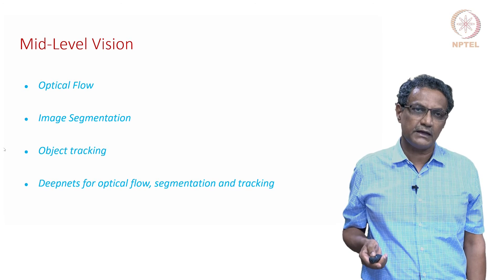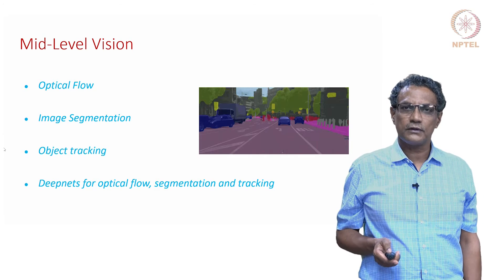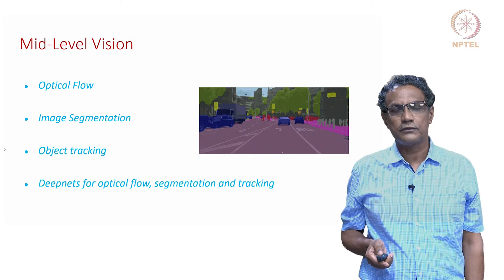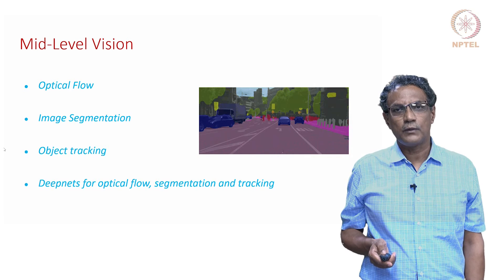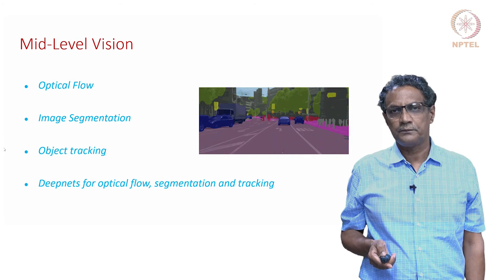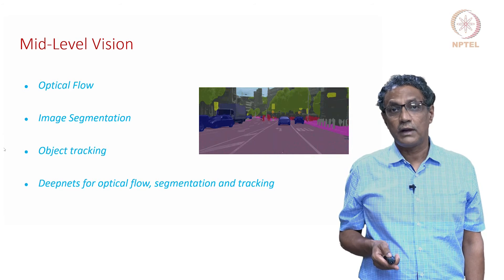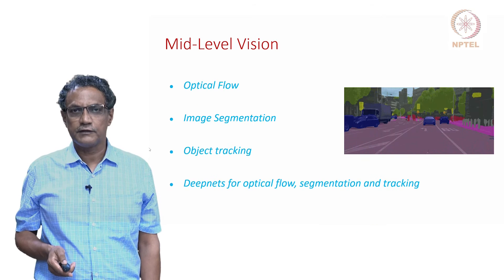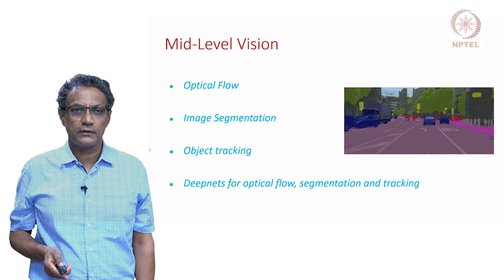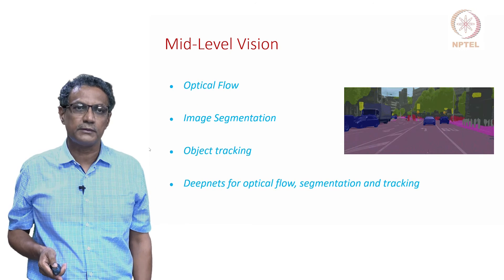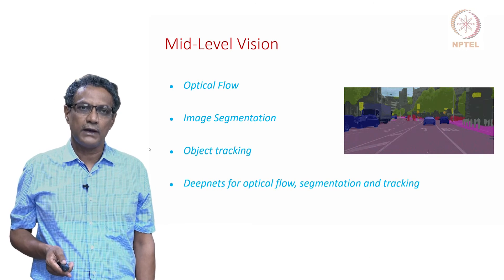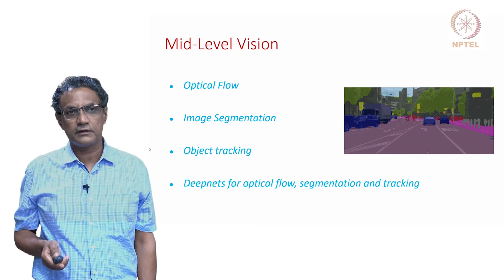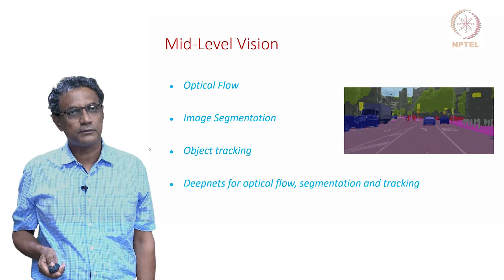Then we go on to the image segmentation problem. Image segmentation would look something like this, where you want to be able to tell where the cars are, where the lanes are, where the trees are, where the buildings are, and so on. We will talk about how deep networks solve this problem while also discussing what has been the traditional approach for these kinds of problems.